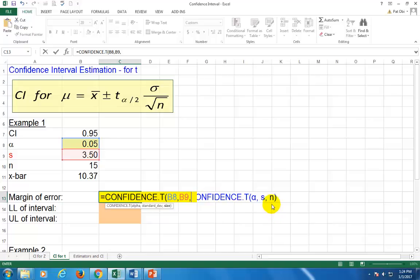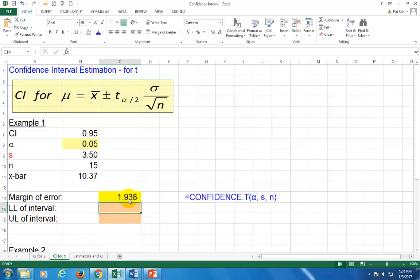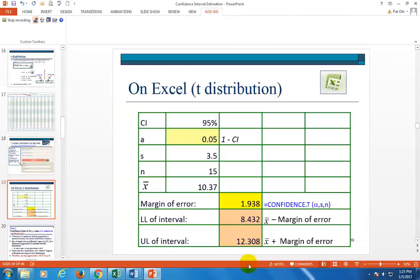Comma, and finally sample size, which is this. Then you close parenthesis. This is the margin of error. That's what Excel gives you. To calculate the lower and upper limits, the sample mean minus the margin of error gives you the lower limit. And the sample mean plus the margin of error gives you the upper limit. That's the lower and upper limits of the 95% confidence interval for this problem.